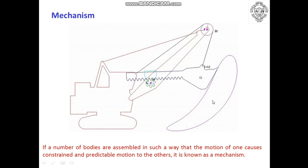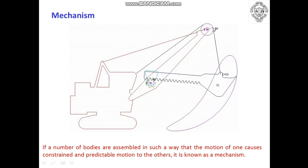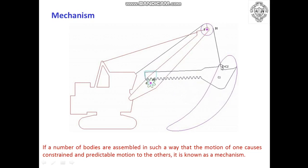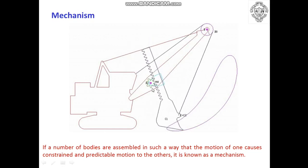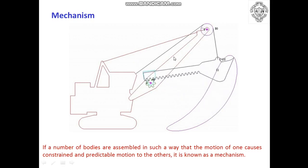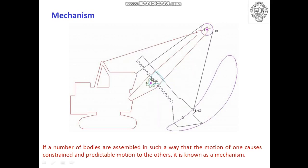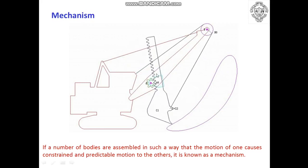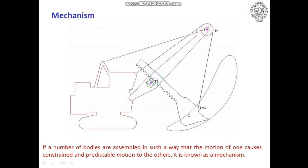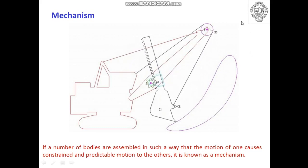For the joints: the fixed link and crank form the first joint, the crank and coupler form the second joint, and the coupler and rack form the third joint. The first three joints are lower pairs because they involve area or surface contact. However, the joint between the rack and pinion is a higher pair because it involves line contact or point contact. The joint between the pinion and fixed link is again a lower pair.